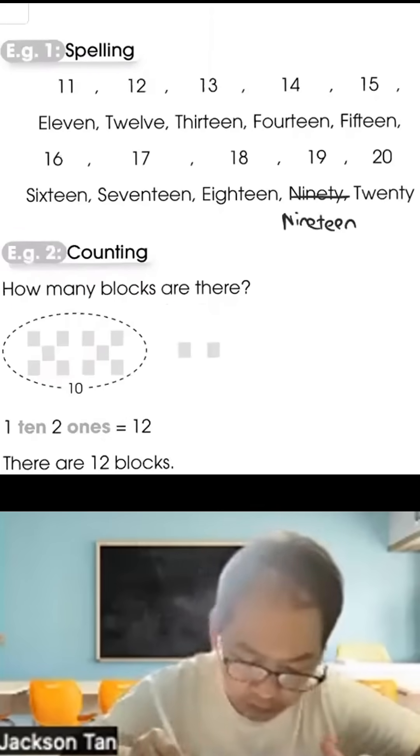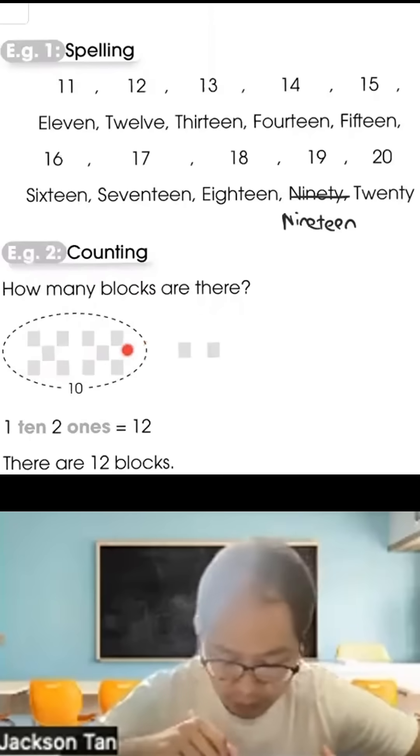For counting, how many blocks are there? We group 10 blocks together, followed by 2 ones. So it's 1 ten, 2 ones, known as 12. There are 12 blocks.